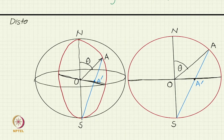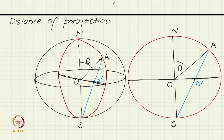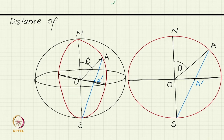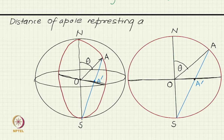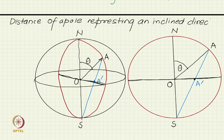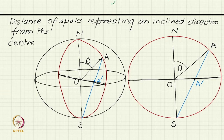We are computing the distance of a pole — a pole representing an inclined direction — from the centre of the primitive. This is the geometry we are trying to establish.